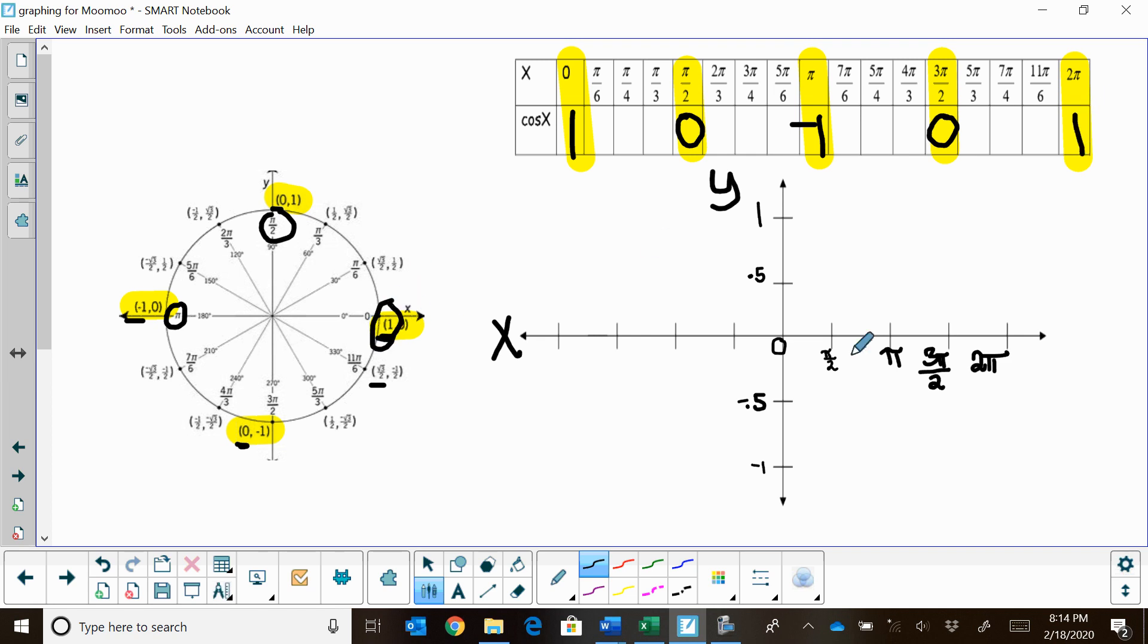I'm going to plot these five points. The graph starts at the angle of 0 and the value of 1. Then when the angle's π/2, we're at 0. When the angle is π, we're at negative 1. When the angle's 3π/2, we're back to 0. And when we're at 2π, we're back where we started. You can see a full cycle.